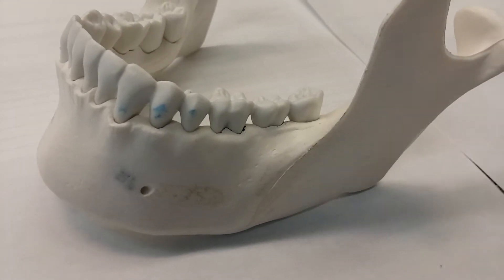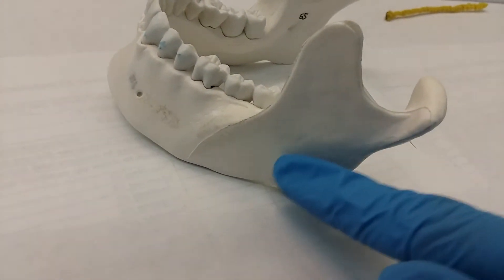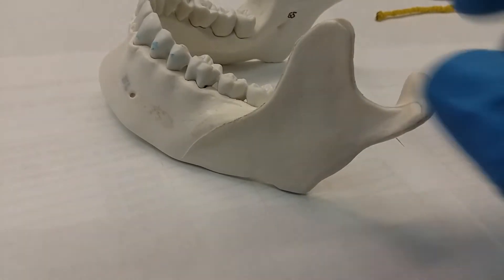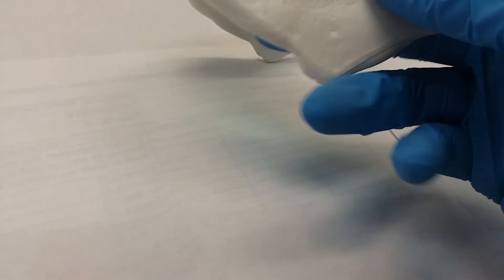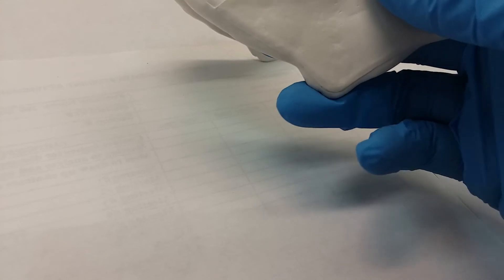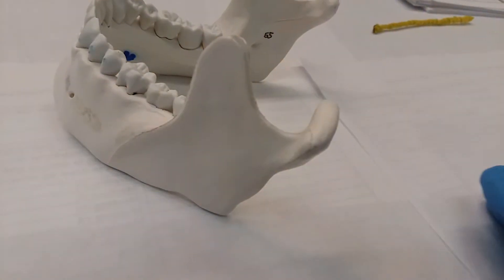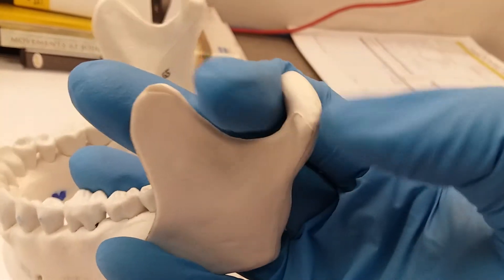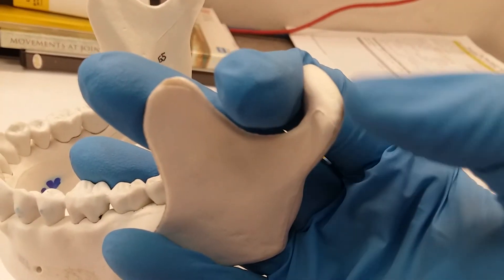We're going to go over the ramus. The ramus is this thick portion right here. It is bordered by the mandibular angle on the bottom, this little angle right here, and then the mandibular condyle on the top, this little piece right here. Now do you guys remember what fossa this goes into? If you said mandibular fossa, you are correct.